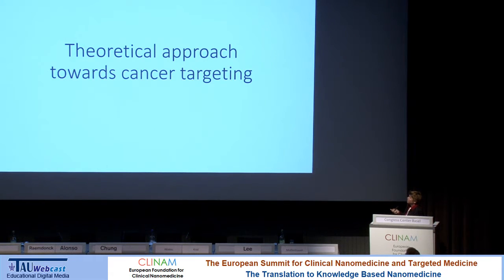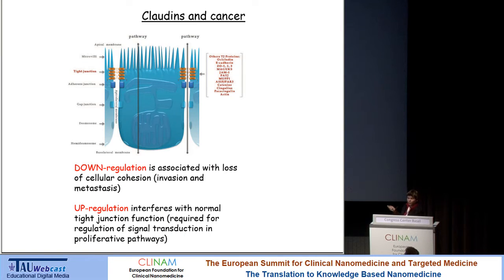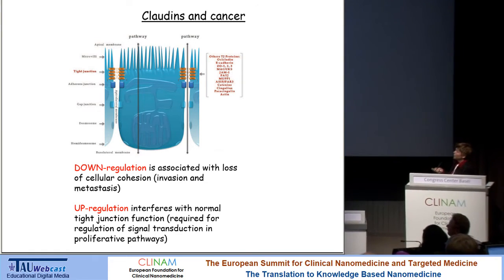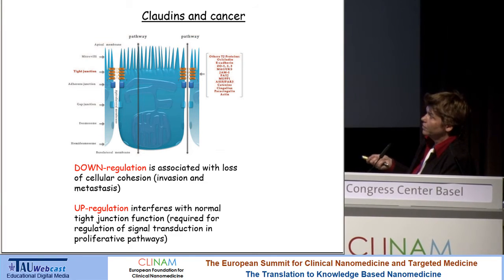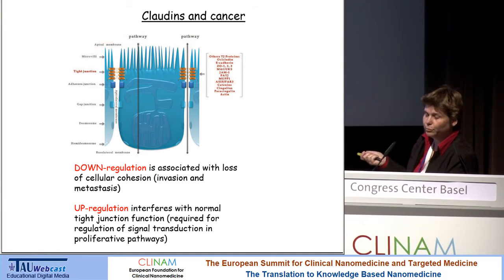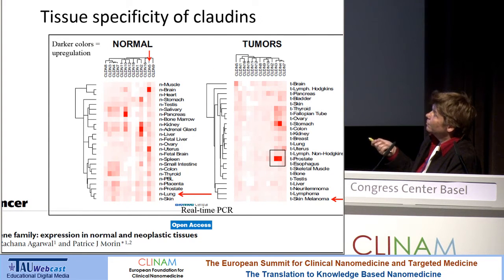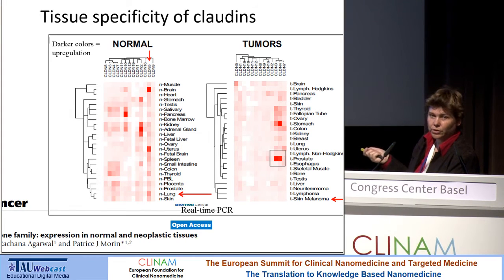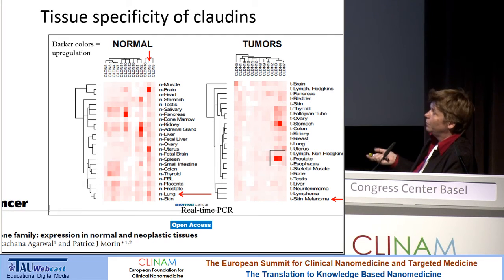The cancer targeting — one of the things, as I said, are some claudins and occludins. Claudins and occludins are molecules usually involved in tight junctions and were found on exosomes in very high concentration. Usually, downregulation of claudins is correlated with a loss of cellular cohesion, so it makes sense that this could be one of the processes in cancer, while upregulation usually interferes with the normal tight junction. In some cases, like in tumorous prostate tissue or in colon cancer, you see an upregulation of some claudins, which is quite interesting. Some of these claudins are induced and embedded in the exosomes.